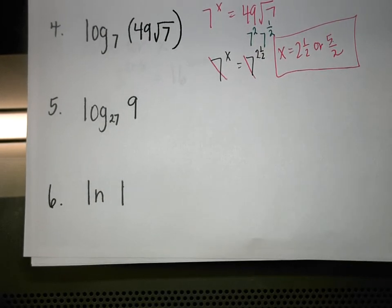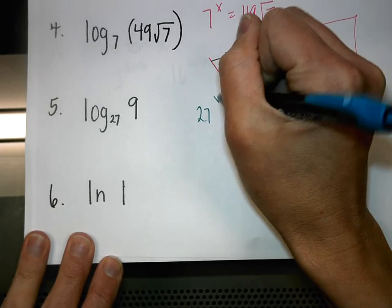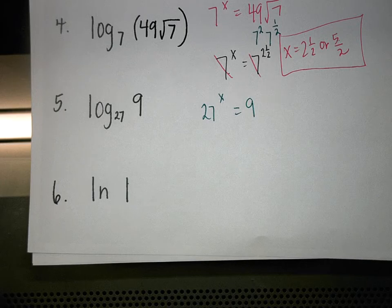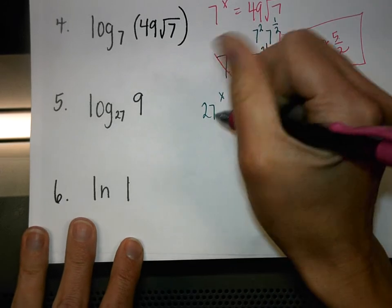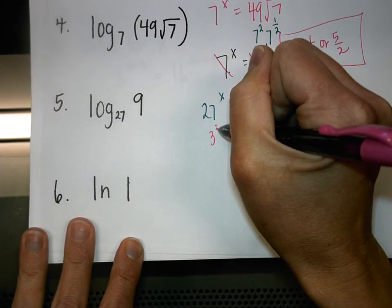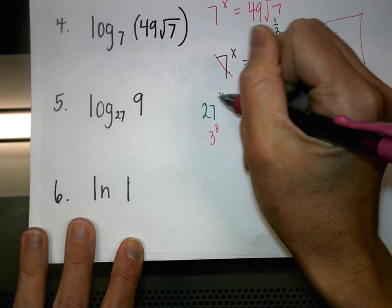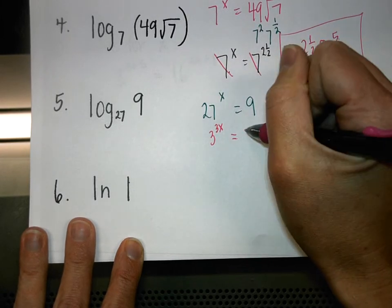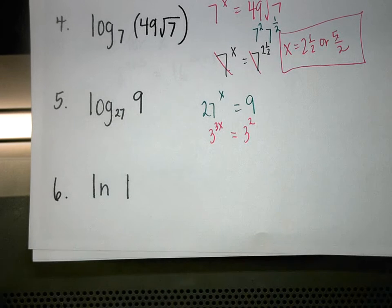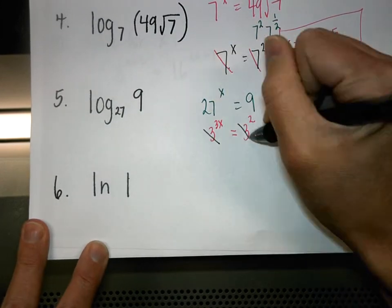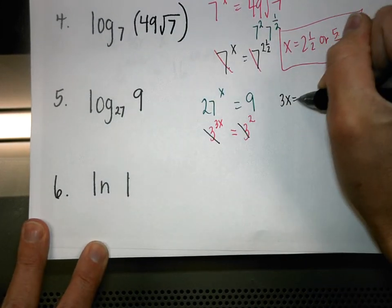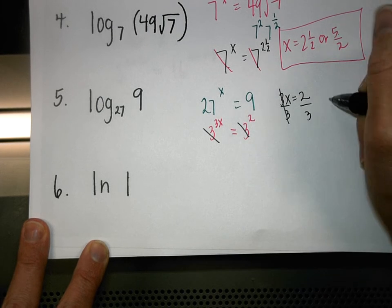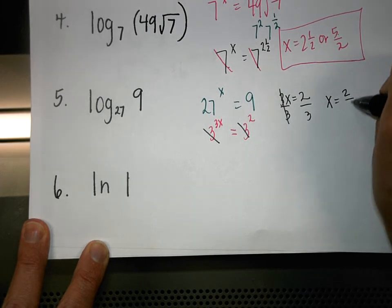Number 5: 27 to what power equals 9? You want to get base 3 — 27 is 3 to the third power. Since you have an X there, you multiply powers to powers, getting 3X. 9 is 3 to the second power, so drop the bases: 3X equals 2. Divide both sides by 3 and X equals 2/3.